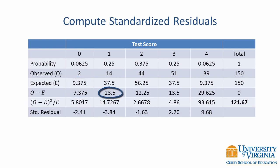Likewise, for a score level of 1, we can take negative 23.5 and divide it by the square root of 37.5 to get our standardized residual of negative 3.84. We compute the remaining residuals in a similar way.